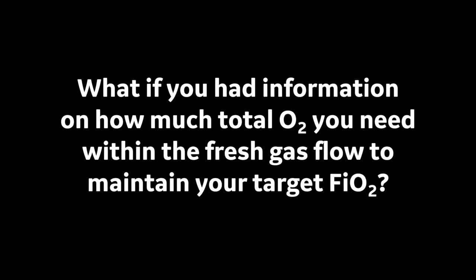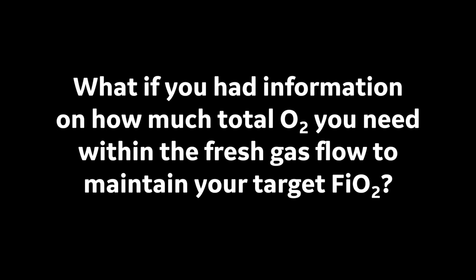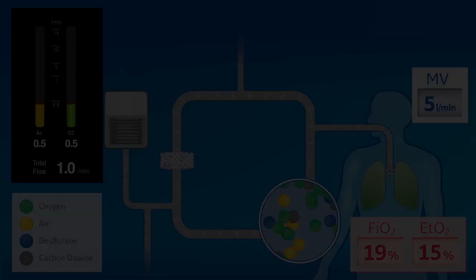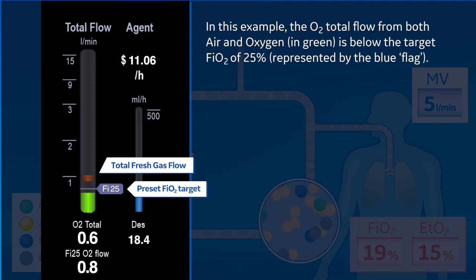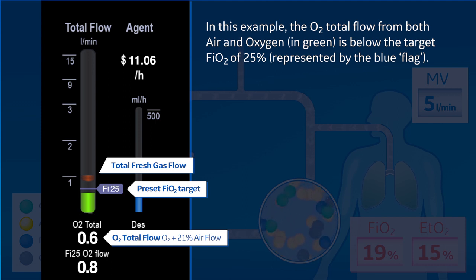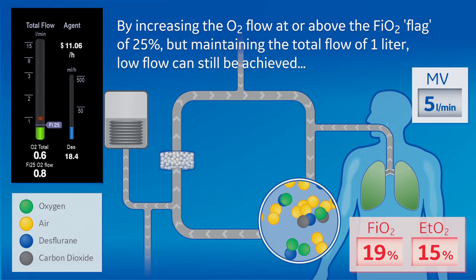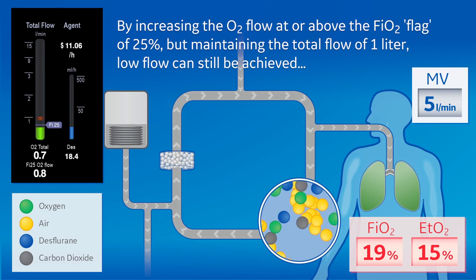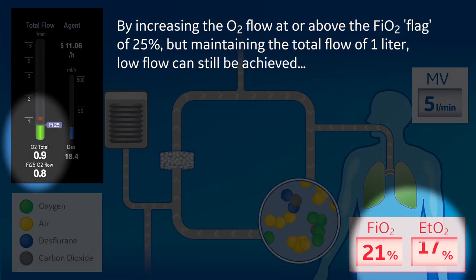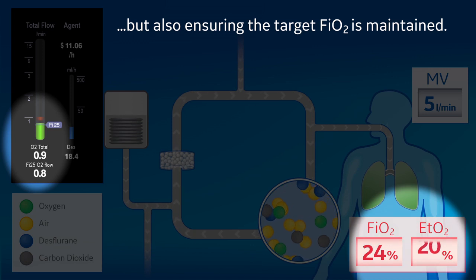But what if you had information on how much total oxygen you need within the fresh gas flow to maintain your target FiO2? EcoFlow provides data on the total oxygen required within the fresh gas flow to help ensure the minimum FiO2 target setting is achieved. In this example, the O2 total flow from both air and oxygen in green is below the target FiO2 of 25%, represented by the blue flag. By increasing the oxygen flow at or above the FiO2 flag of 25%, but maintaining the total flow of one liter, low flow can still be achieved while also ensuring the target FiO2 is maintained.